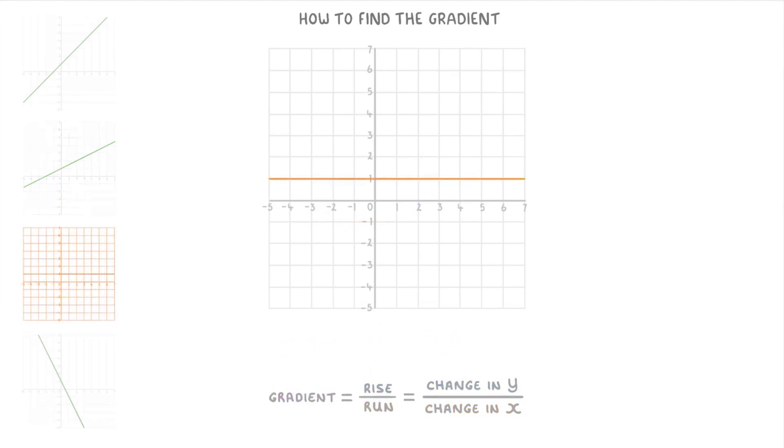If we switch to our third graph now, this one doesn't rise at all. So no matter which points you pick along the line, the rise will always be 0. Which means that our gradient will always be 0 as well.